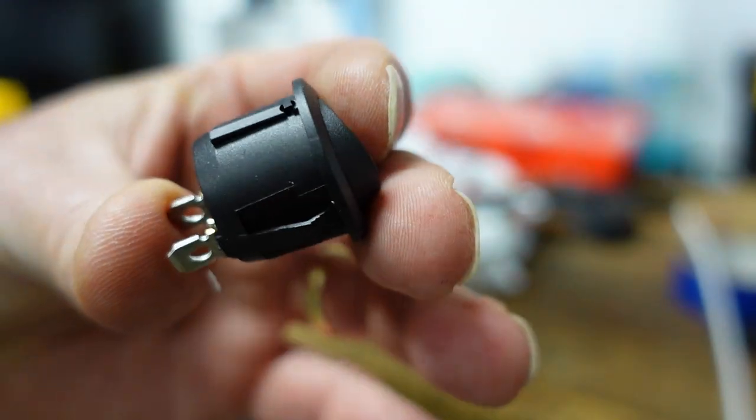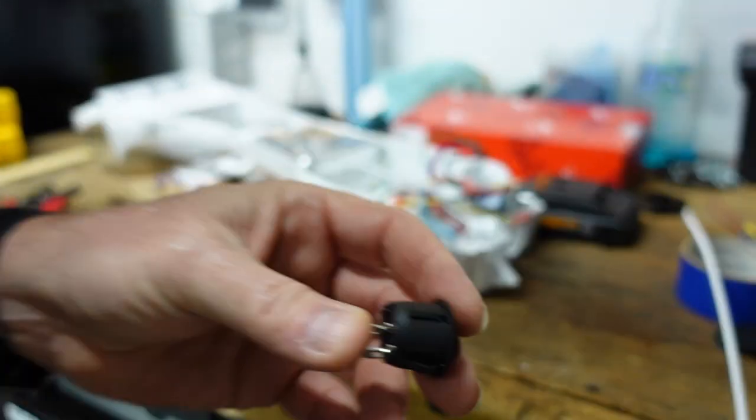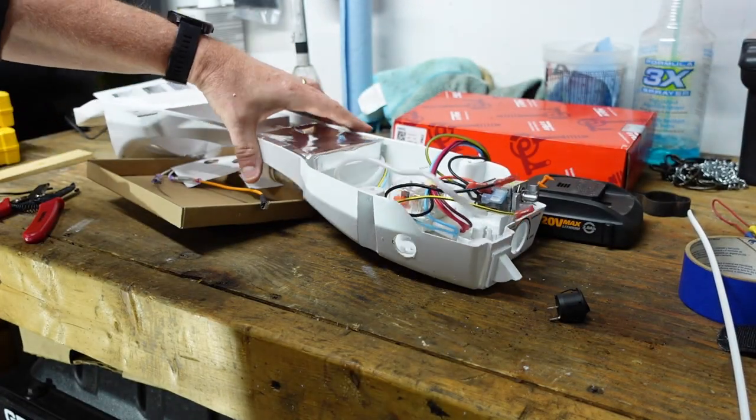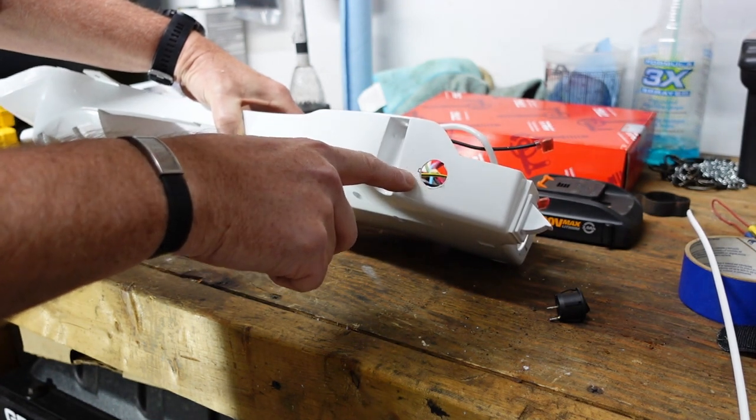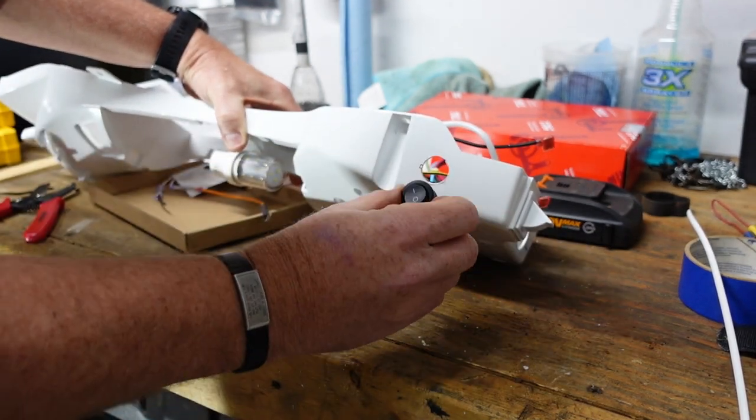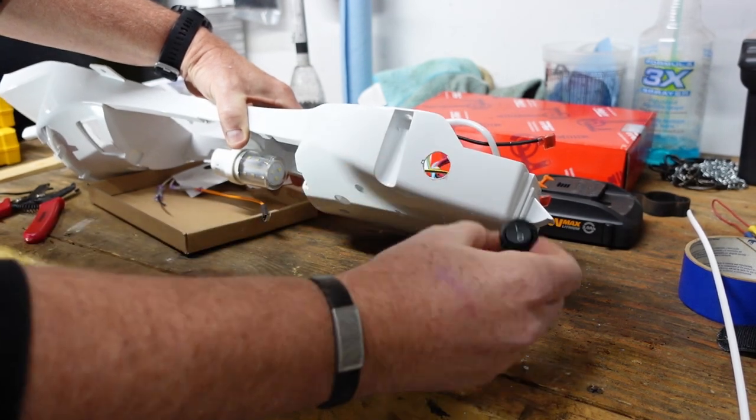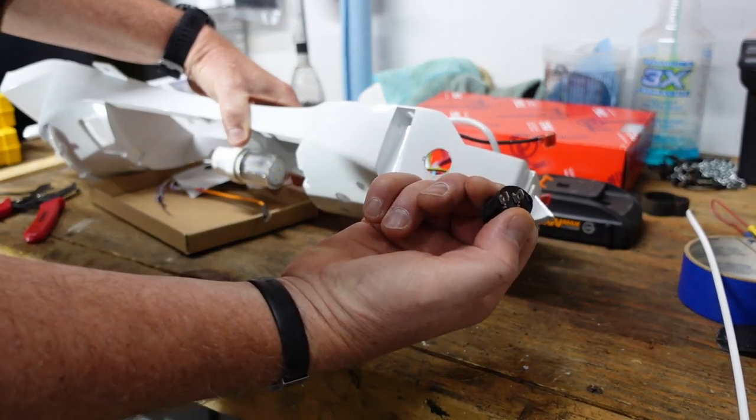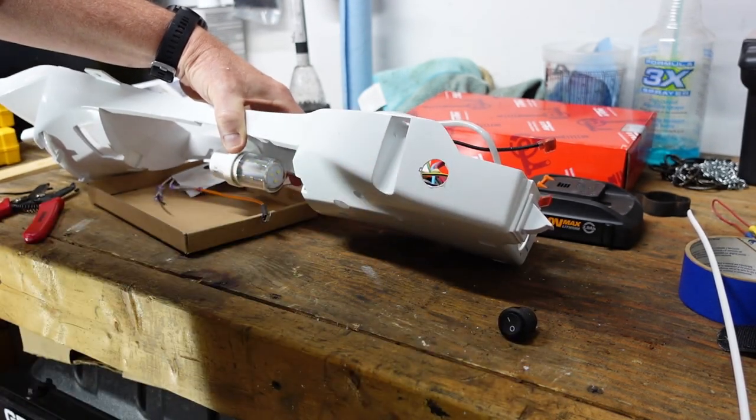All right, so the switch does have a little tab. You can see that right there. So I have a rotary tool. What I'm going to do is take the rotary tool, clean this hole up a little bit, and I marked a little black spot where the notch is going to go so that when the switch goes in, it mounts straight up and down like this. I'm going to go ahead and do that off camera just to kind of clean this up and make it pretty.